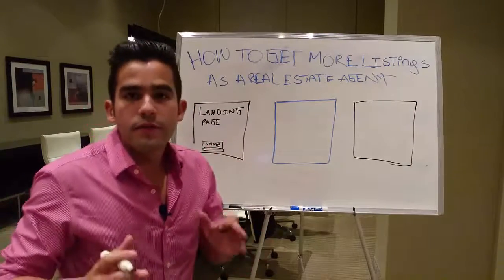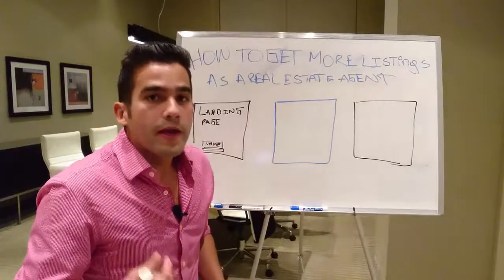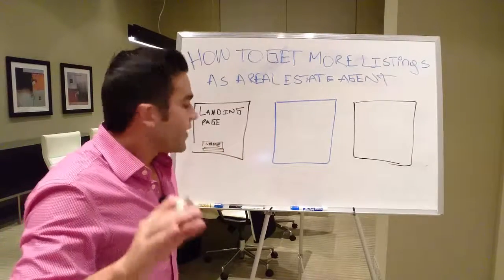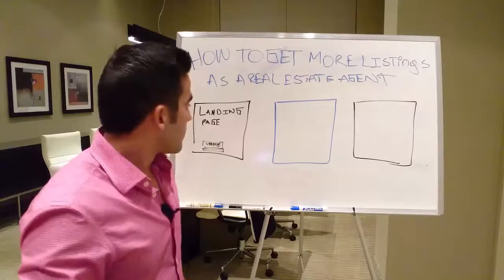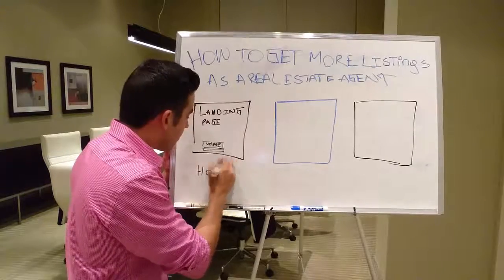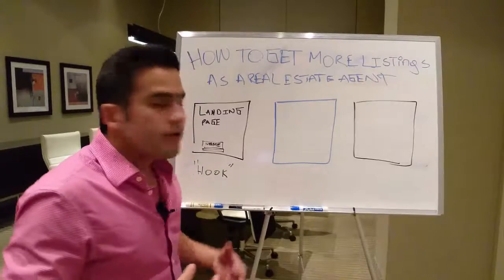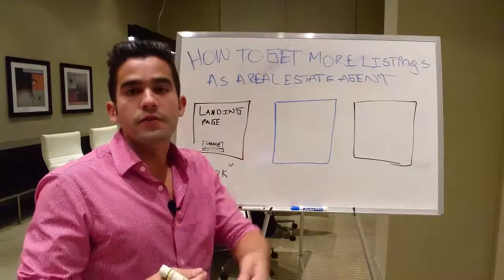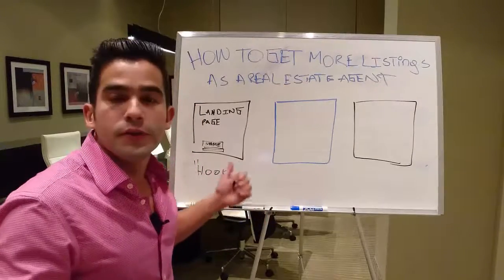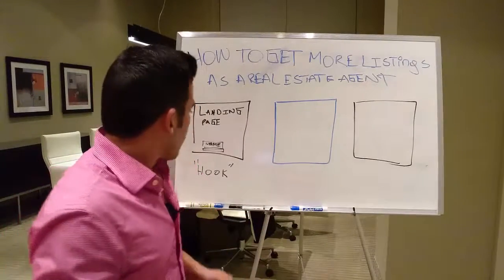Your landing page is going to entice your prospect to give you their contact info so you can reach out, pick up the phone, and call them. By opting into your page, they are actually requesting your help and assistance. But you need a hook — something you give away so people come to you. In exchange for their information, it could be a PDF, a how-to guide on the best way to sell your house without listing it, or anything of value.